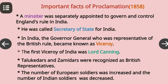Let's know some important facts about the proclamation. A minister was separately appointed to govern and control England's rule in India. He was called Secretary of State for India. In India, the Governor General, who was the representative of British rule, became known as Viceroy.